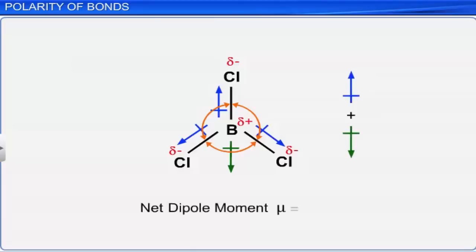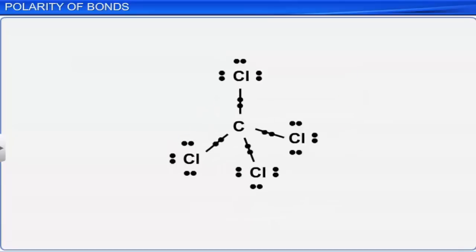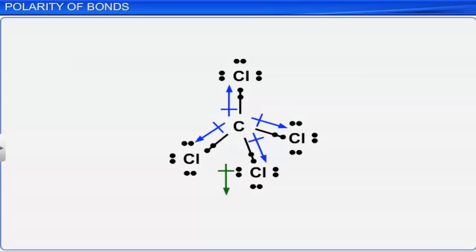Let us take the carbon tetrachloride molecule. As the resultant bond dipoles are equal and in opposite directions, they get cancelled, and the net dipole moment of the molecule is equal to zero.